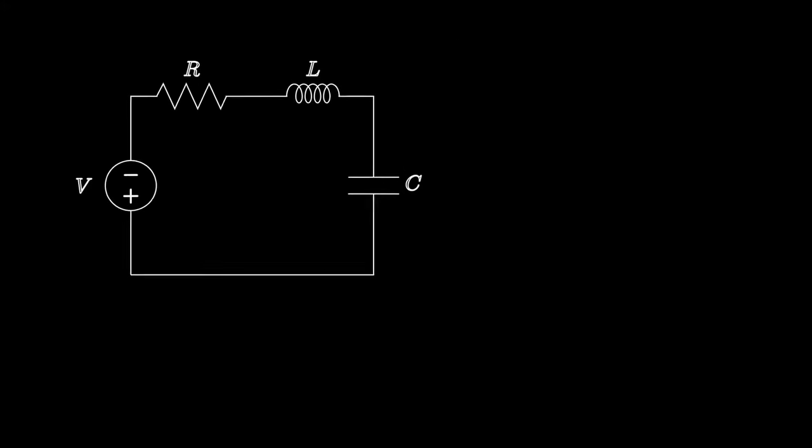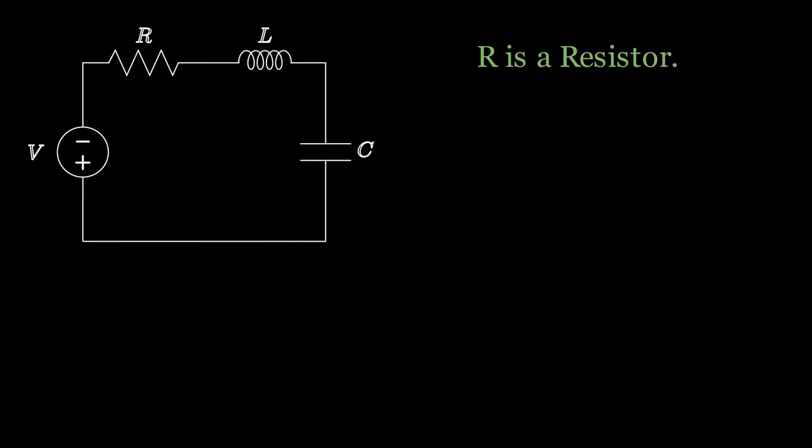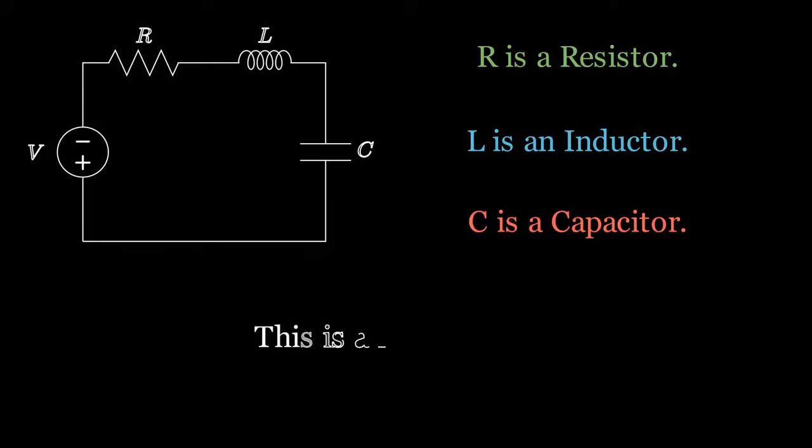Let's move on to a bit of basic terminology. The R here is a resistor, the L is an inductor, and finally, the C is a capacitor. Putting all of these together, we get the name RLC circuit.